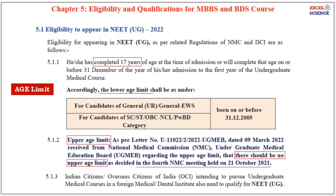Now let's learn about the eligibility and qualifications for MBBS and BDS courses. Students who are appearing in the 12th standard examination with subjects Physics, Chemistry, and Biology are eligible to appear in the NEET UG examination. Regarding age limits, the candidate has to complete 17 years of age at the time of admission, or will complete that age on or before 31st December of the year of admission to the first year of the undergraduate medical course. The lower age limit is 17 years.